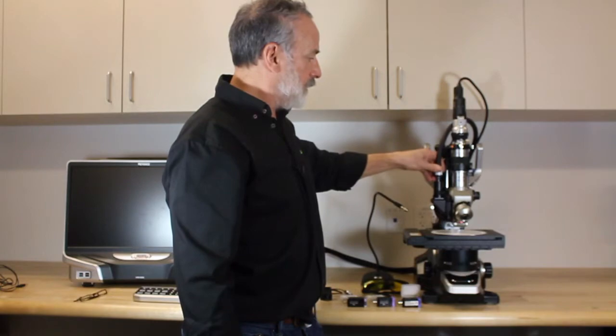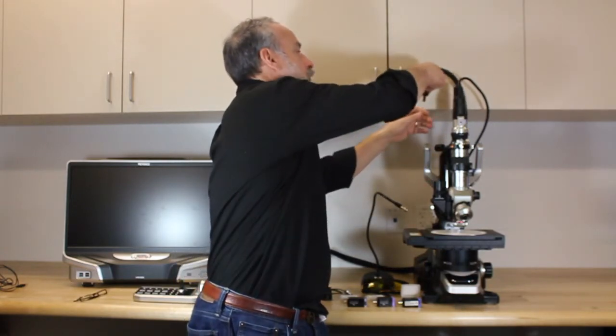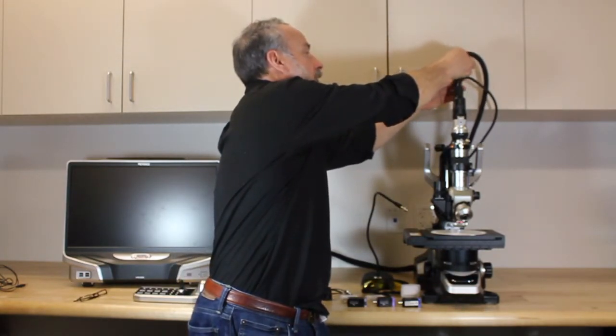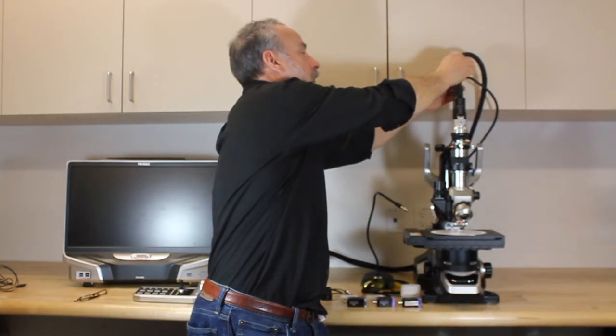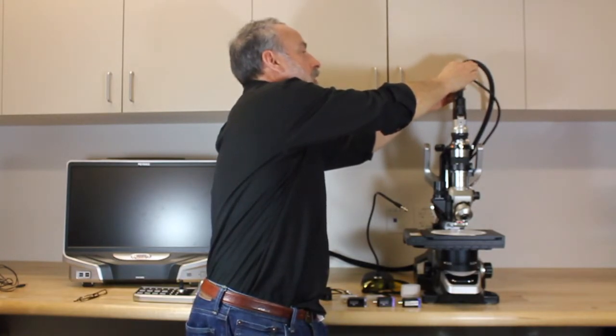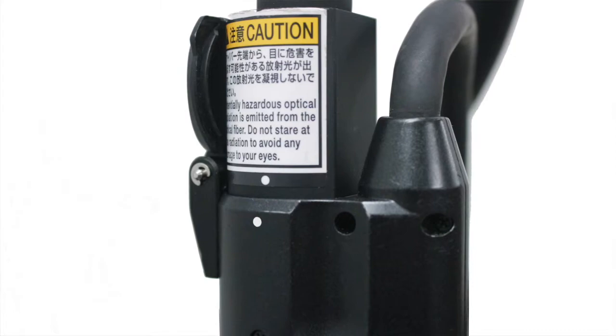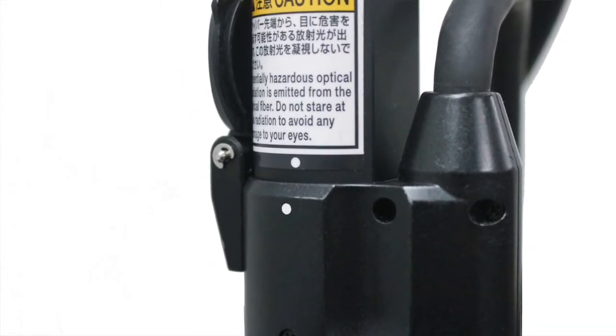We remove the Keyence fiber, lifting straight up, and we can park it out of the way at the slot up at the top. Just bring it up there, line up the white dots, put it in place, and that can live up there out of the way.